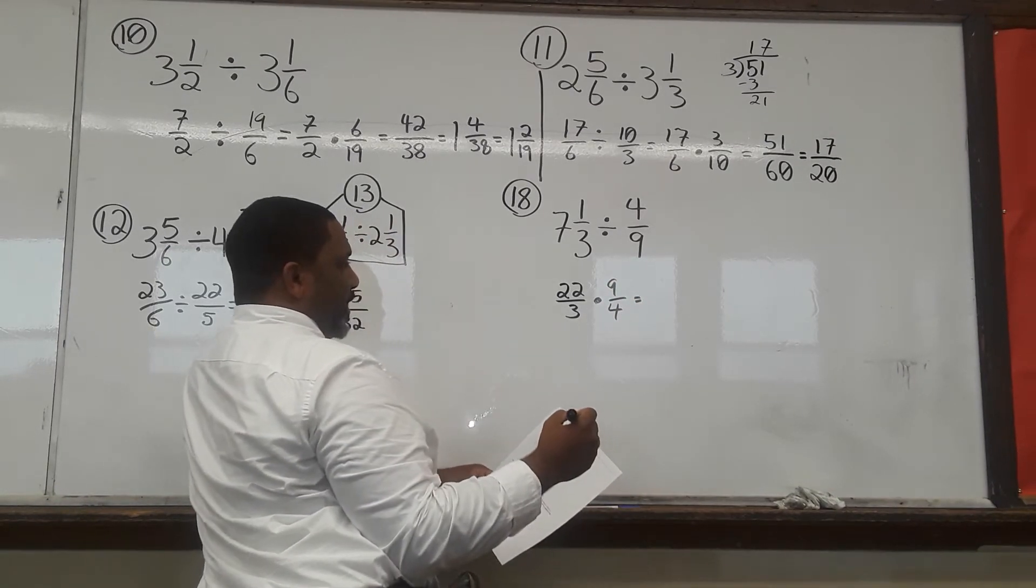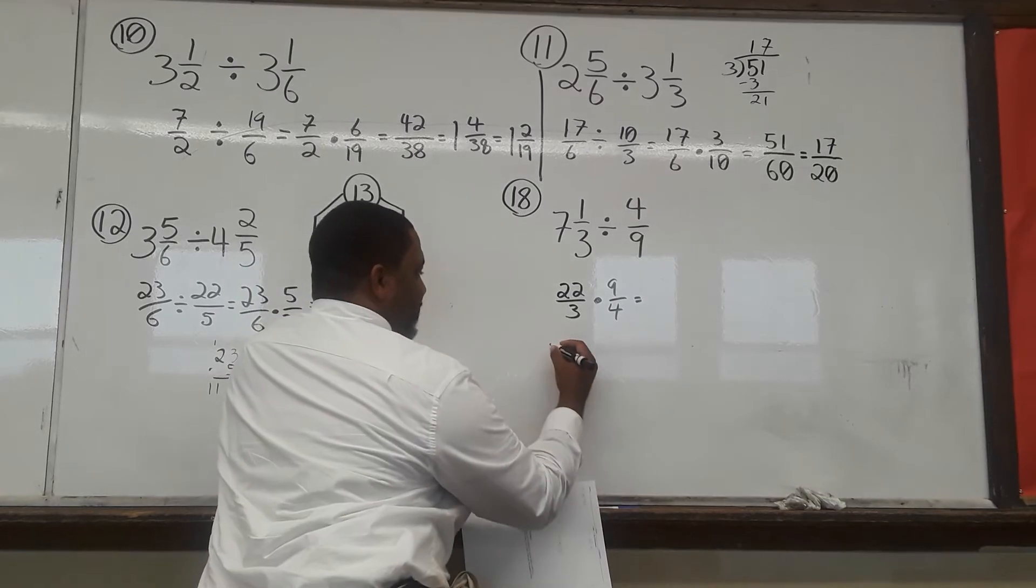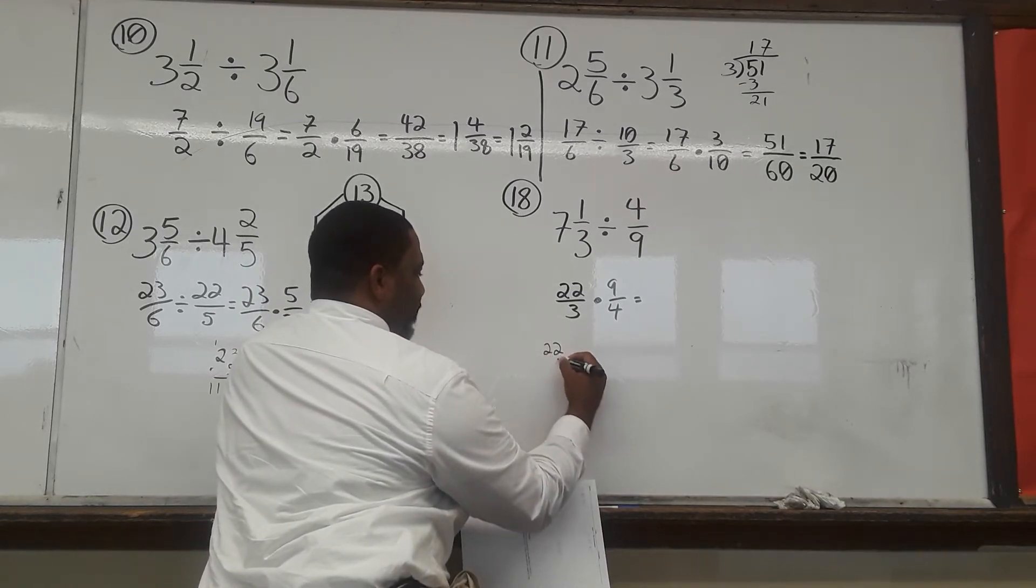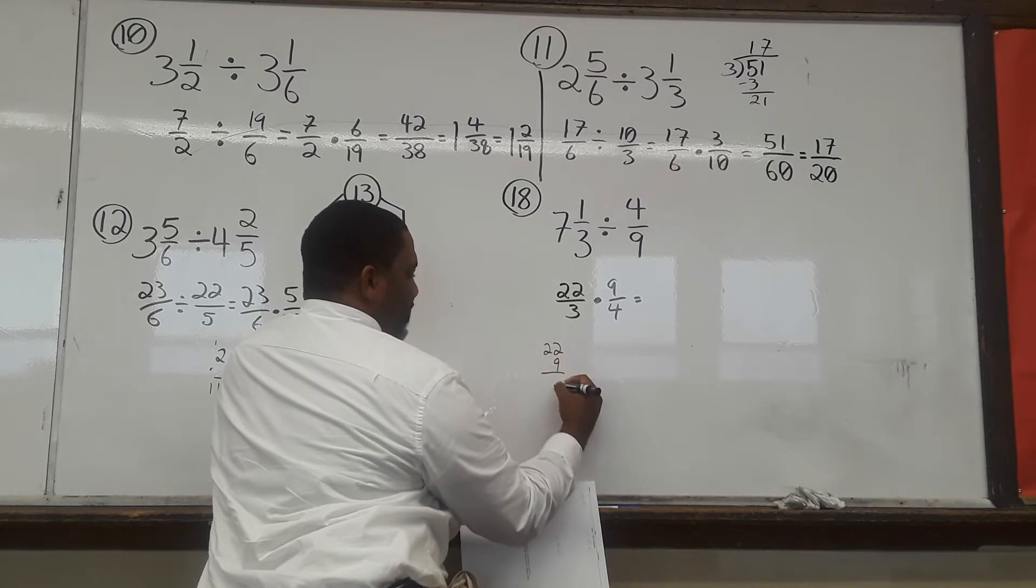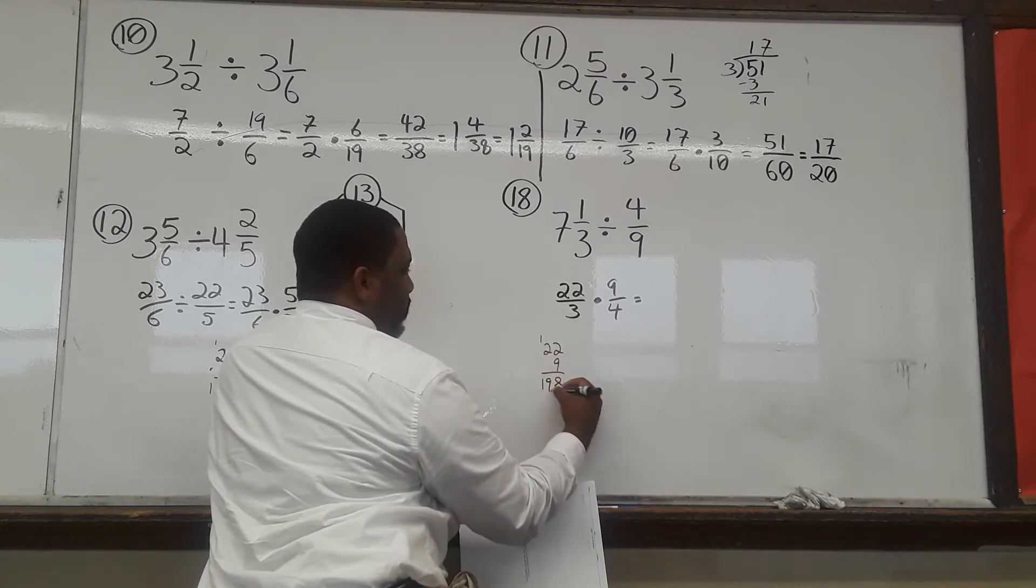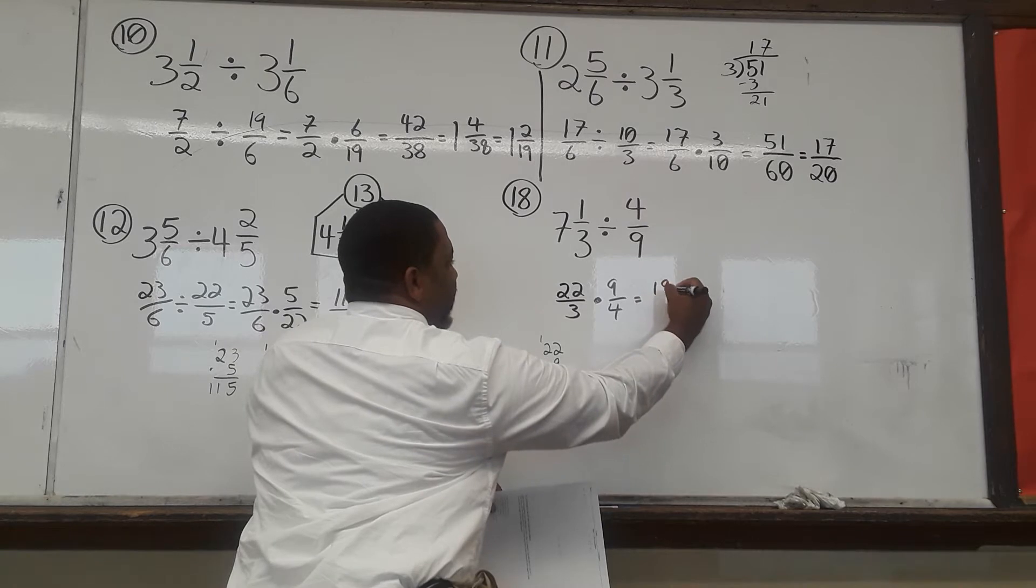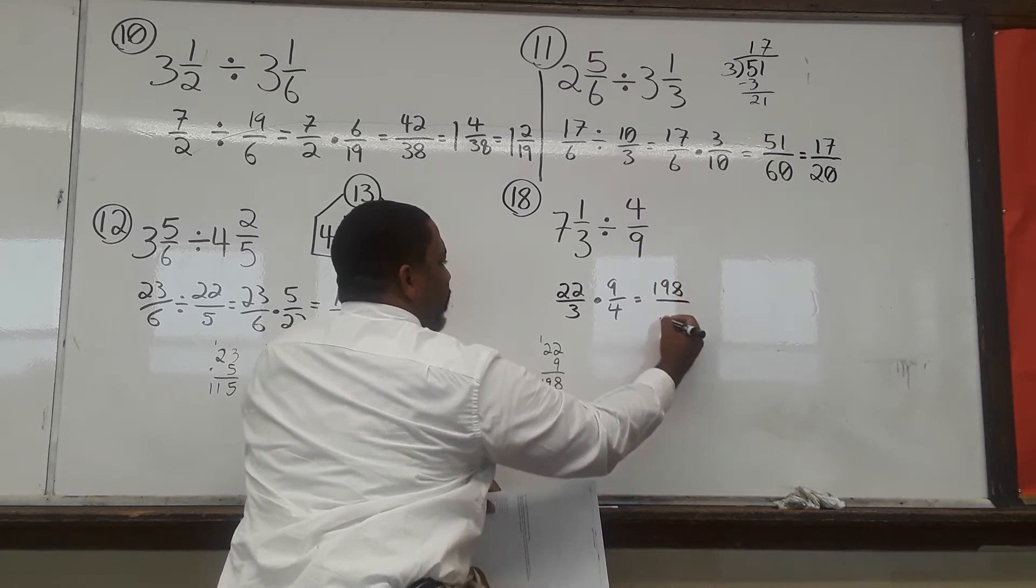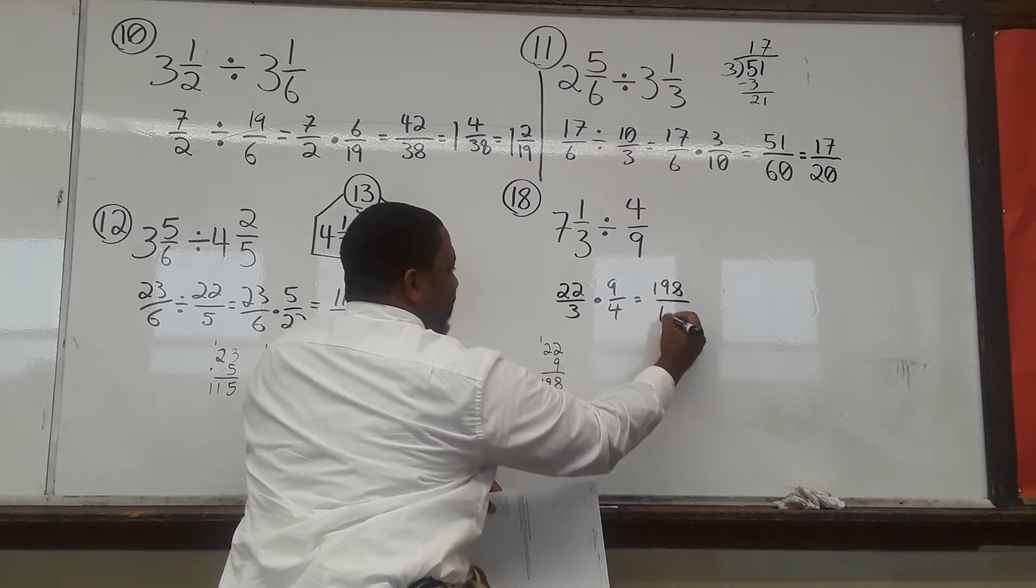Okay, we're going to go ahead and multiply straight across. 22 times 9. I certainly don't know off the top of my head. So, 2 times 9 is 18, carry 1, 82 again, 19, 198. That's 198 over 3 times 4 gives us 12.